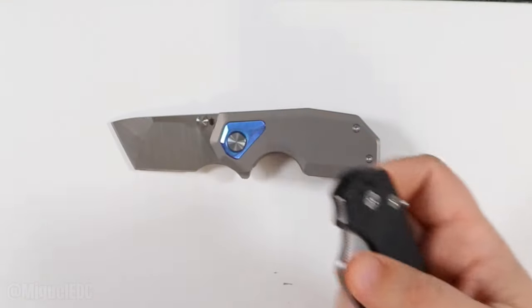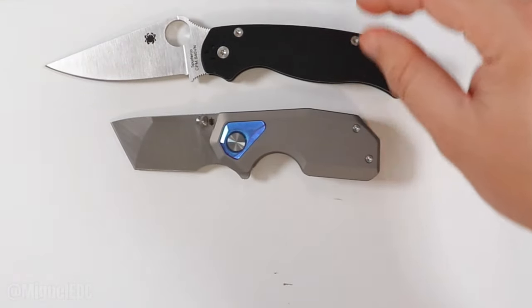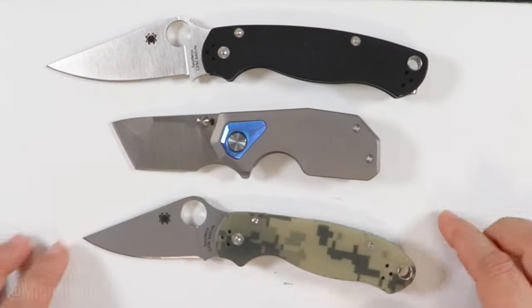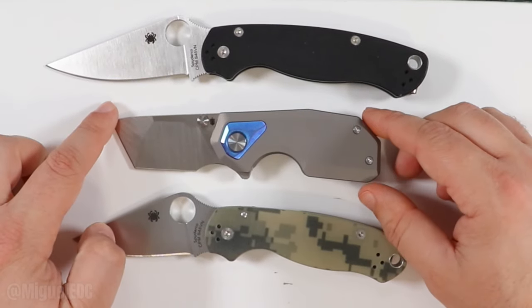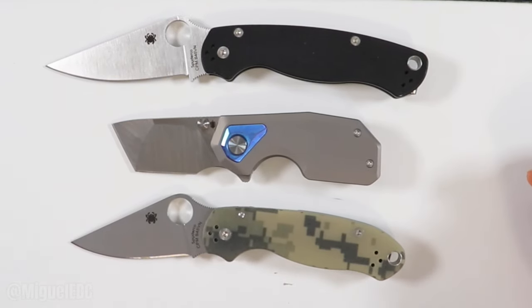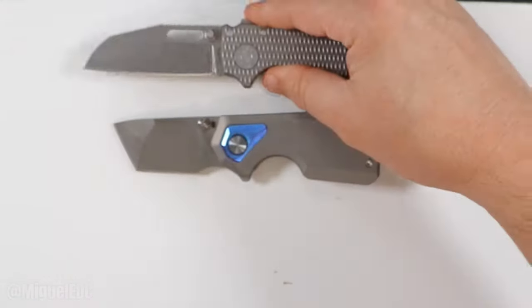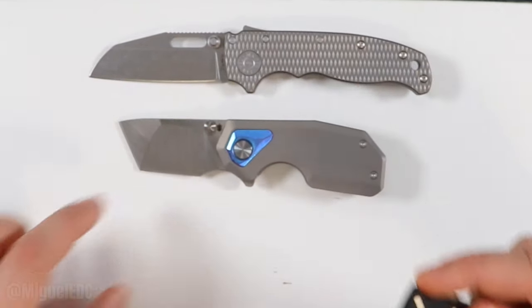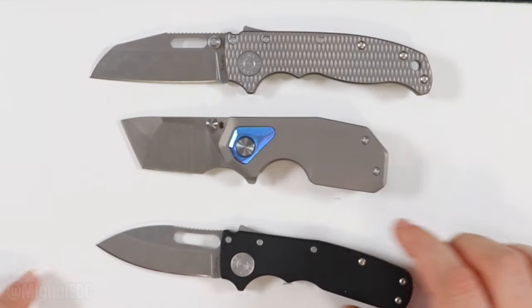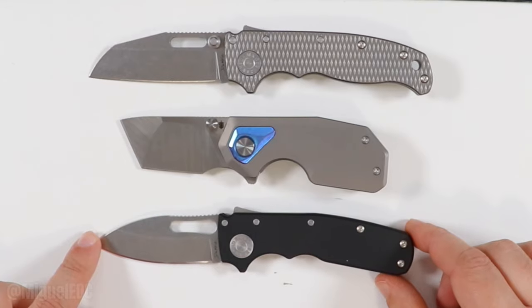Demko AD 20.5. And the Sheepsfoot blade and the slicer. Shark Cub. Smaller brother. All of these look like huge knives next to this tiny guy, to say the least. Rat Model 1 and Rat Model 2.